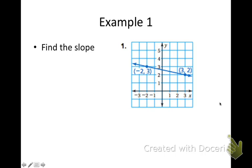So we're going to find the slope in example 1. So I see two ordered pairs and I'm just going to call them the two points. So the first point would be negative 2, 3 and the second point would be 3, 2.